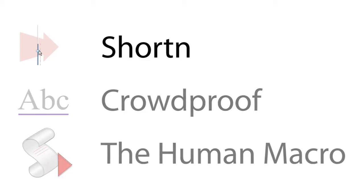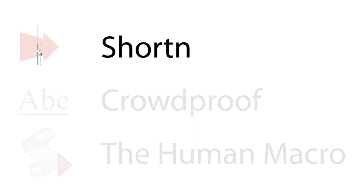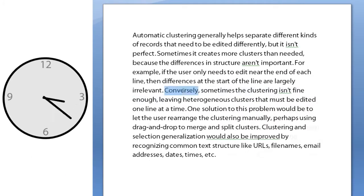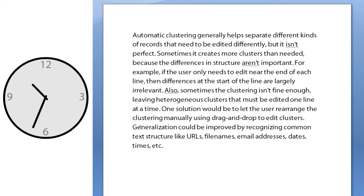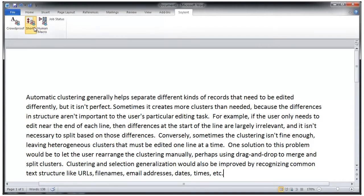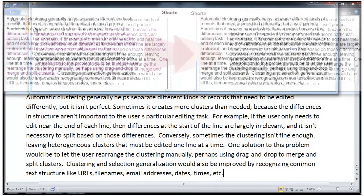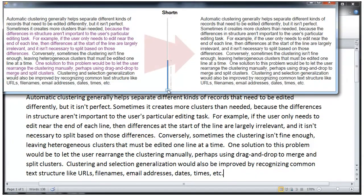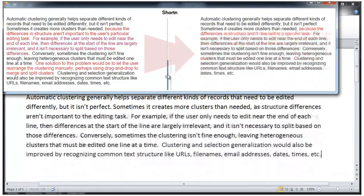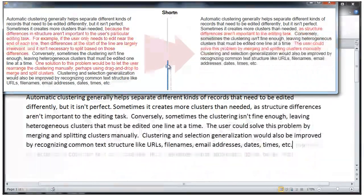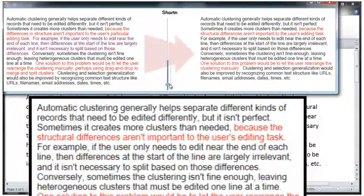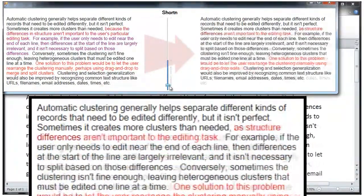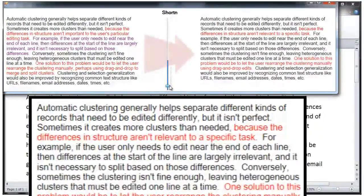One of Soylent's features is called Shorten. Shorten helps writers cut down their text. It's tough to trim a document to meet a size limit — it takes time, and it's hard to look objectively at your own writing. Shorten asks Mechanical Turk workers to find parts of the document that can be cut down without changing your meaning, and then offer a few rewrites. Its interface gives you direct control over the length of the text. Drag the slider to specify the length you want for your paragraph, and Shorten combines the edits to match.